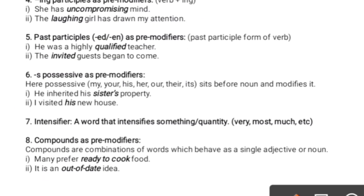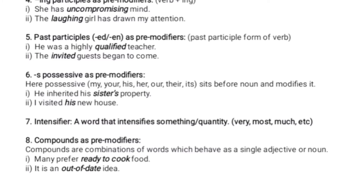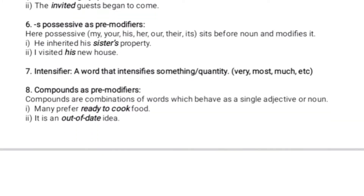Number six: possessive is used as a pre-modifier. The word 'possessive' comes from possession, meaning to have something in one's possession. Words used as possessives include: my, your, his, her, our, their, its, etc. For example: 'He inherited his sister's property' — 'sister's' is a possessive. In the second example: 'I visited his new house' — 'his' is a possessive. Next, an intensifier is a word that intensifies something or some quantity — words like 'very,' 'most,' or 'much.'